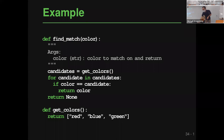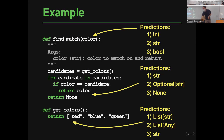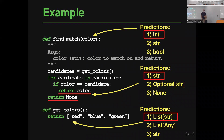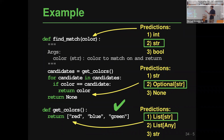For our running example: start with the top-1 predictions, which give two type errors. Try the second prediction for 'color', removing one error. Then try the second prediction for the first function's return type, removing the remaining error — giving a fully type-correct annotated program.